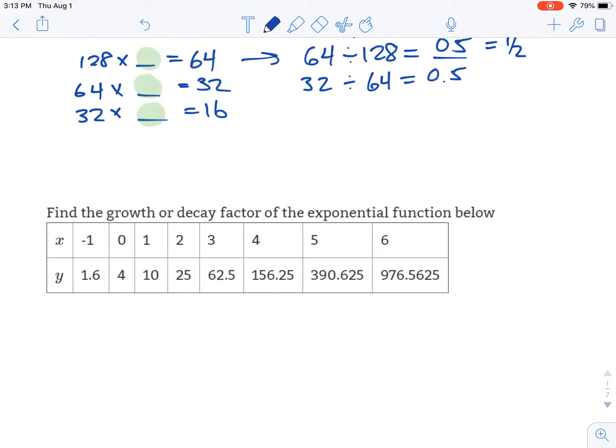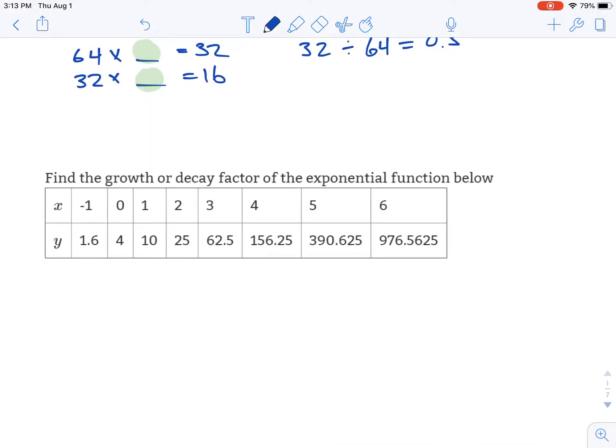For the next one, we've got growth because the numbers are getting bigger every time. 1.6 becomes 4, becomes 10, becomes 25, etc. So every time we're multiplying by some number, some growth factor, since it is getting bigger, it is increasing.